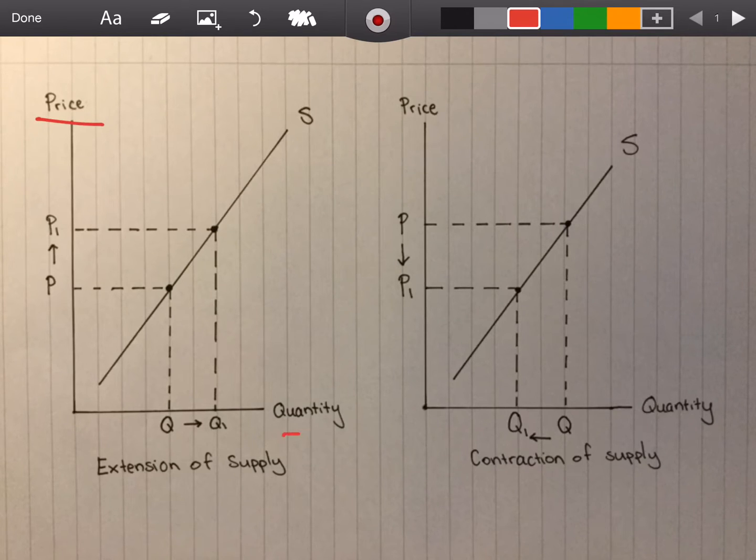Again, the basics: make sure you label price and quantity on your axes. I tell my students not to use P and Q because you're going to end up using those anyway to label the points along these axes.